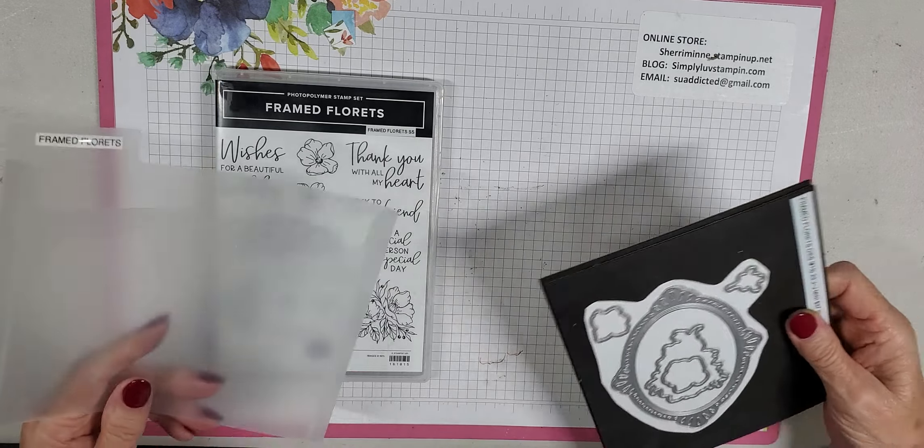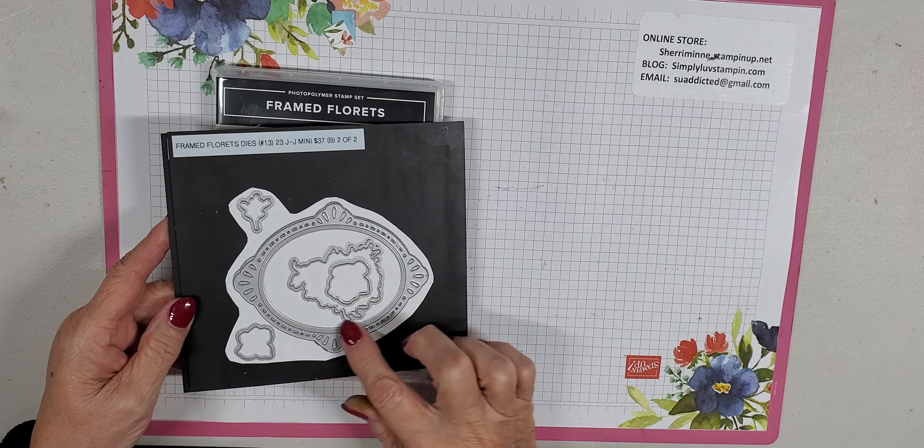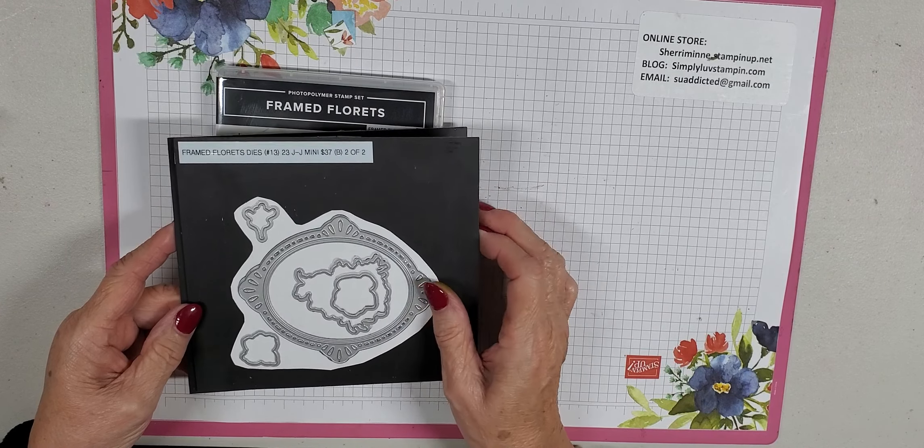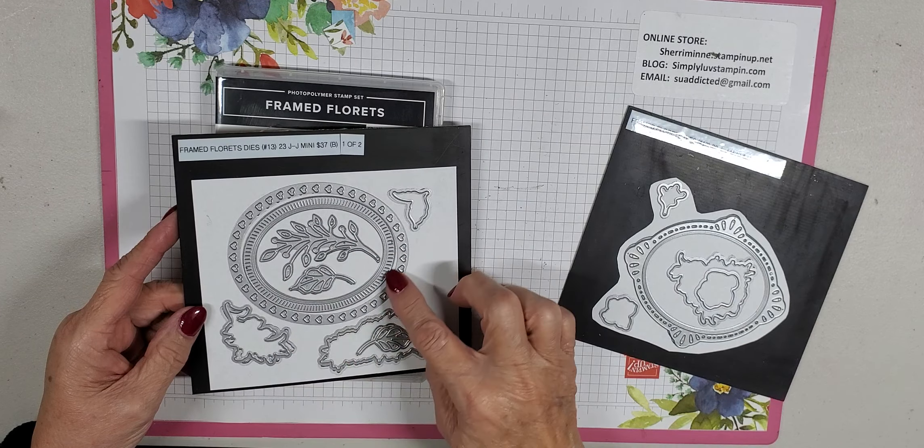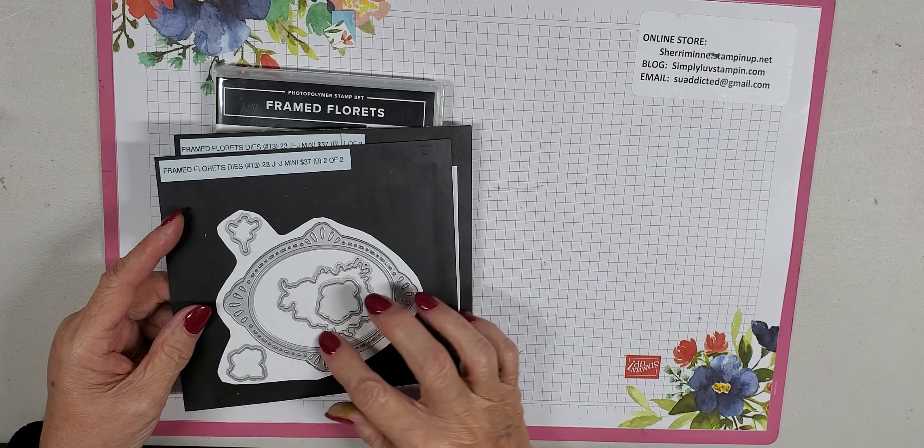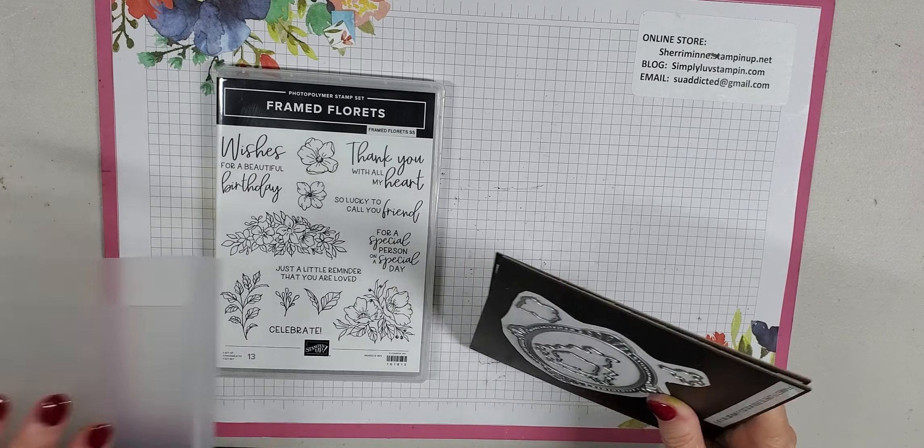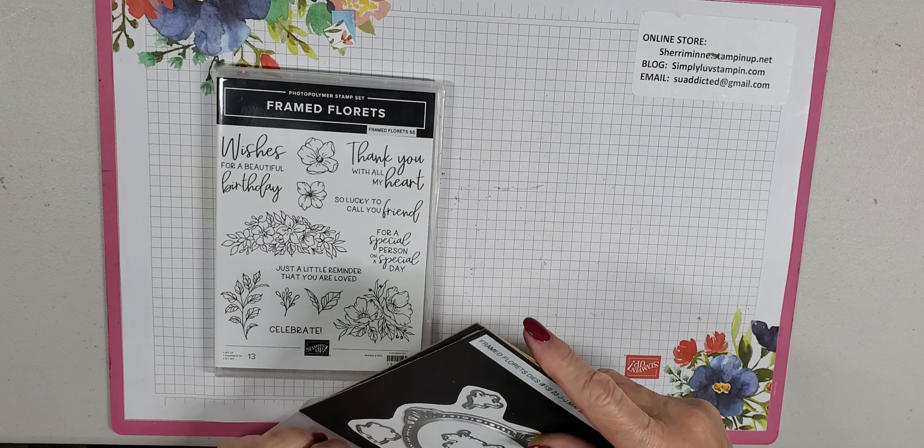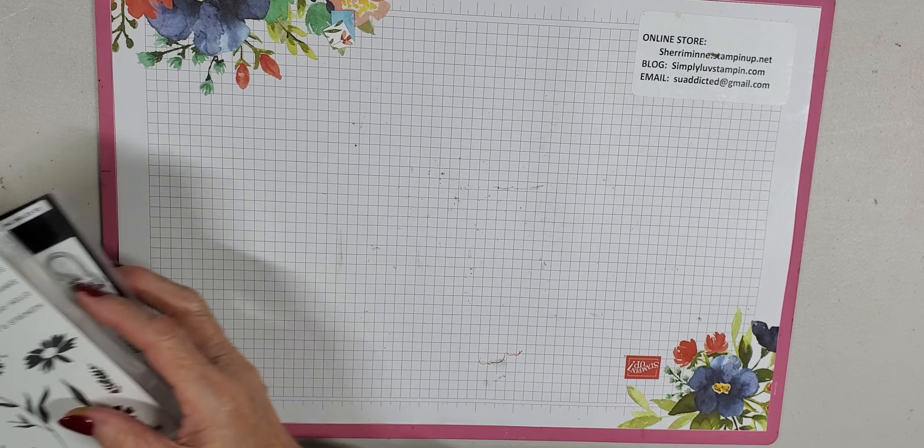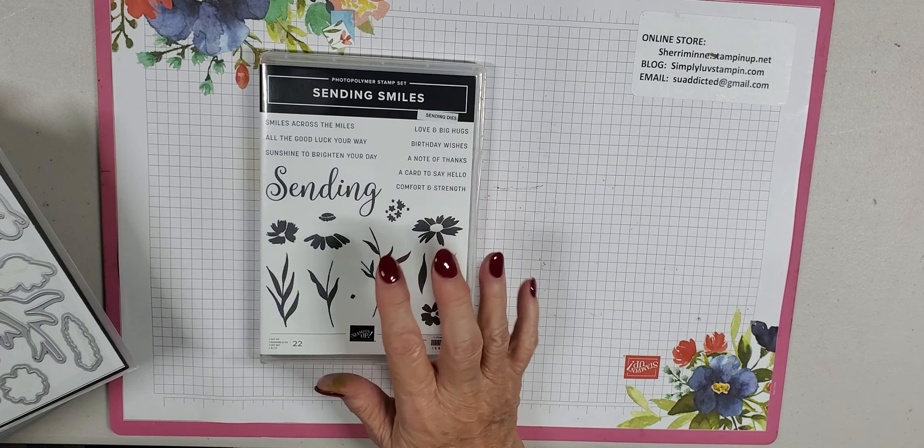The new bundle that is out, the early release, is called Framed Florets. We're actually not using the stamp set today, but we are using the dies. It comes with some beautiful dies called Framed Florets dies. We're going to be using this oval with some very nice decorative ovals. And then we're going to be using this one with the hearts. On this one, all we're using is actually the inside oval, but I wanted the one that has some embossing around the ends.